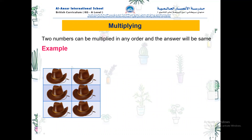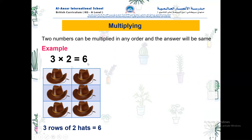Now, two numbers can be multiplied in any order and the answer will be the same. For example, look at here. I have three rows of two hats — one, two, three. Three rows of two hats, and the total is two, four, six. So the multiplication sentence is three times two equals six.